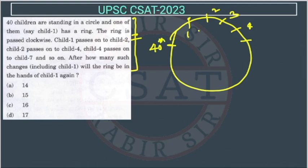So what is happening? So this is the first one. The first one is passing the ring to the second child, and the second is passing to the fourth child, and the fourth is passing this ring to the seventh child.